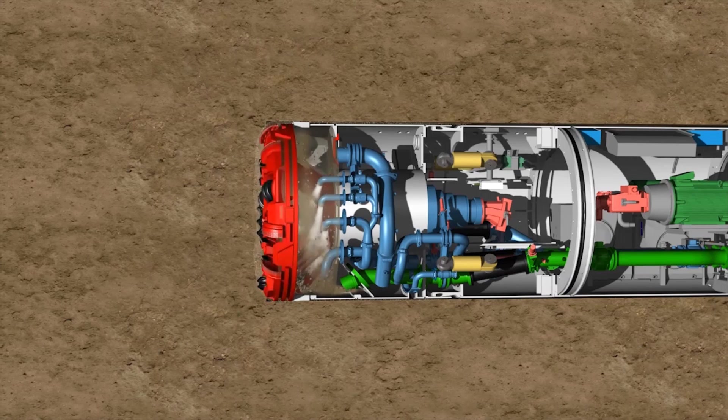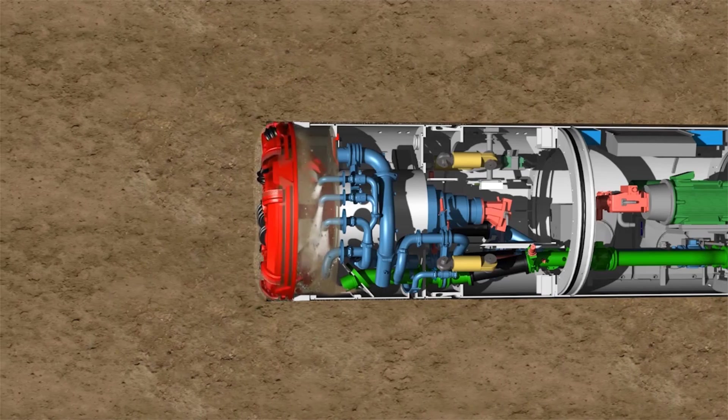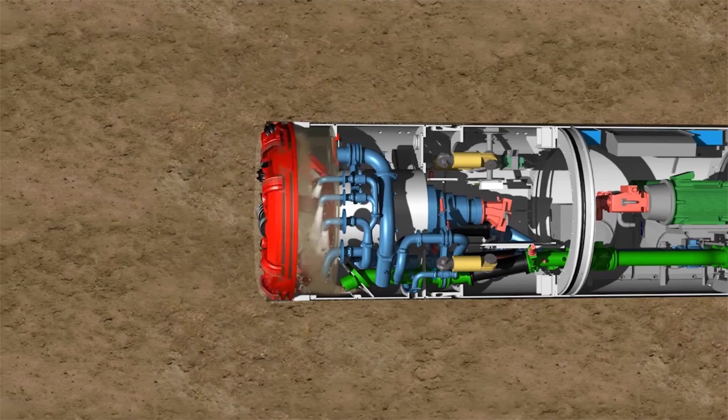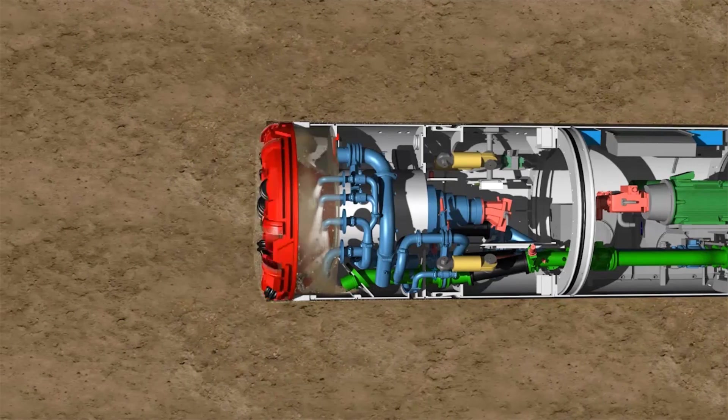When tunneling in homogeneous, fine-grained soils, the machine works in slurry mode. In this case, only the excavation chamber is completely filled with support fluid.